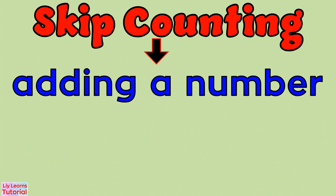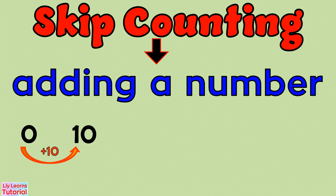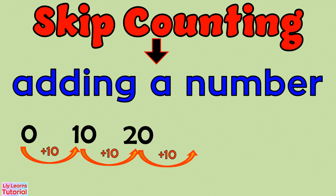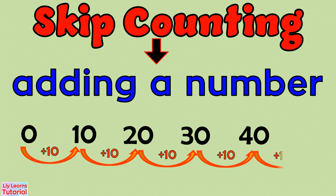And we add 10 if we do skip counting by 10. 0 plus 10 is 10. Plus 10 is 20. Plus 10 is 30. Plus 10 is 40. Plus 10 is 50. And so on.